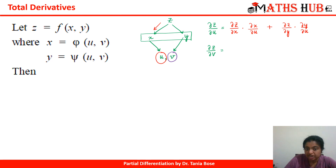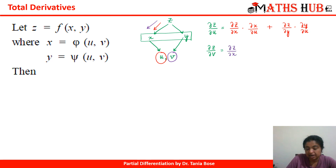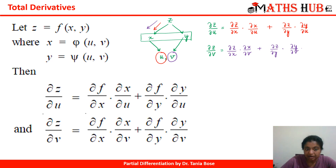Similarly, for ∂z/∂v, the channels are z with respect to x then x with respect to v, plus z with respect to y then y with respect to v. In both steps the function depends on more than one variable, so we get: ∂z/∂v = (∂z/∂x)(∂x/∂v) + (∂z/∂y)(∂y/∂v). These are the two formulas for a composite function of two variables u and v — and again, you don't need to memorize them; just use the tree diagram.